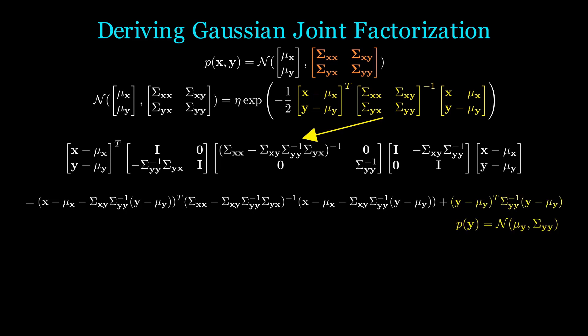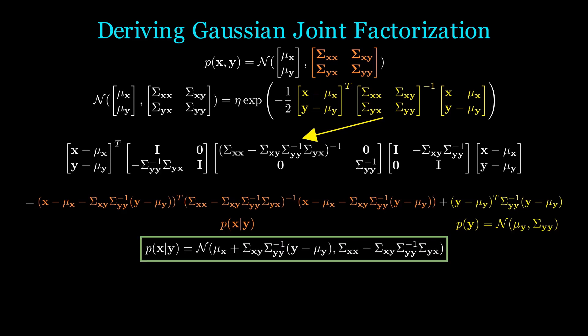By definition of joint Gaussians, we know this term on the right is what P(y) is. Hence, we know that the stuff on the left must be P(x|y). Looking at this quadratic term, we can take out the mean and covariance of P(x|y) accordingly.